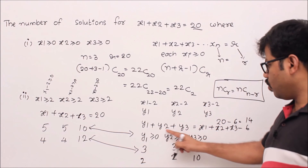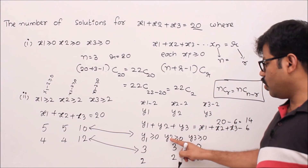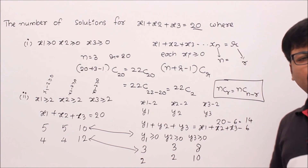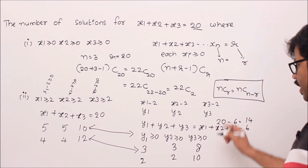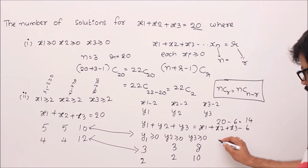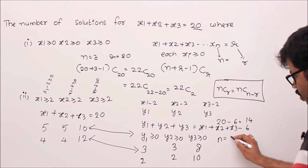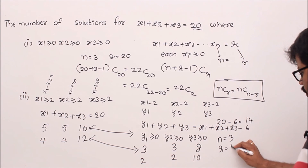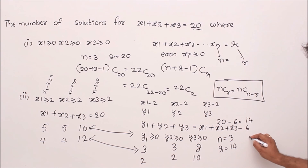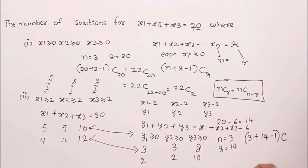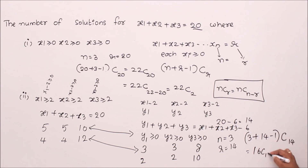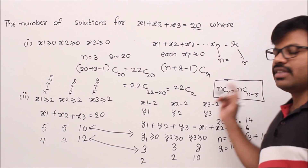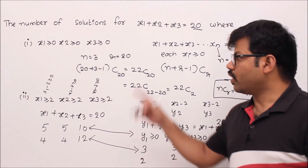So the problem reduces to finding the number of solutions for y1 plus y2 plus y3 equal to 14, where y1, y2, y3 are all greater than or equal to 0. Using the direct formula n plus r minus 1 choose r, with n equal to 3 and r equal to 14, we get 3 plus 14 minus 1 choose 14, which is 16C14, and that equals 16C2.